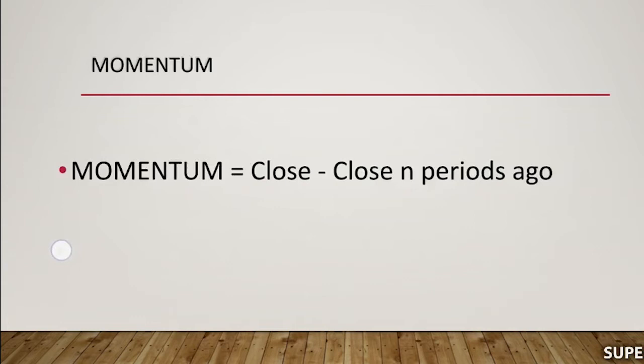Momentum is simply the difference, and the rate of change is a ratio expressed in percentage. The momentum can be calculated using this equation: Close minus Close N periods ago — that means current closing price minus old closing price.